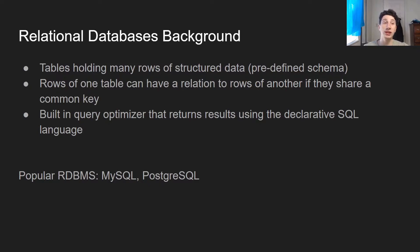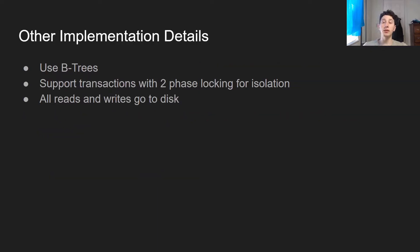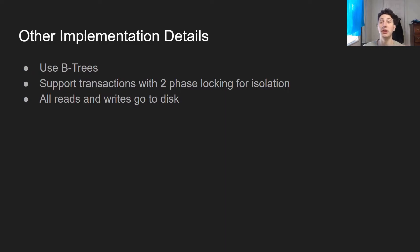The most popular relational databases you might have heard of are probably MySQL and PostgreSQL. Here are some other implementation details: generally speaking, they use B-trees, which we've spoken about in the first episode on this channel, and that means you're writing and reading from disk. Additionally, they support transactions using two-phase locking, which is another thing we've spoken about on the channel. And all reads and writes go to disk.